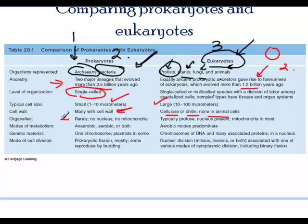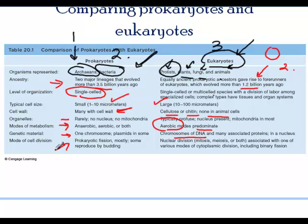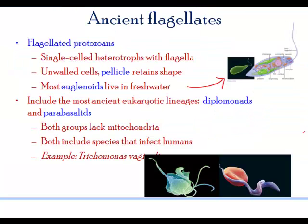Prokaryotes have no organelles, whereas eukaryotes have a nucleus and mitochondria in almost all of them. Prokaryotes have metabolism that is anaerobic or aerobic, while aerobic processes are most predominant in eukaryotes. Prokaryotes have one chromosome versus many chromosomes in eukaryotes. They divide by fission or budding, while eukaryotes have proper division — mitosis and meiosis. This was just a review.